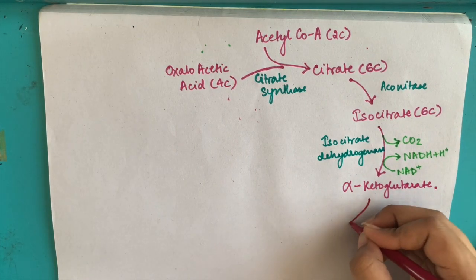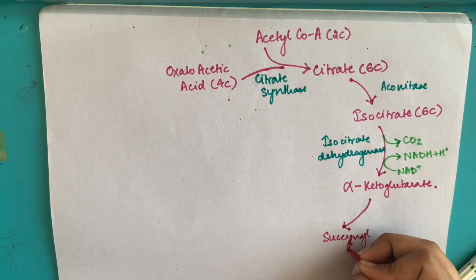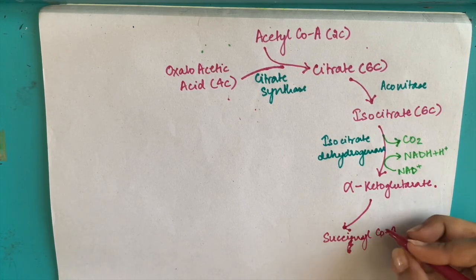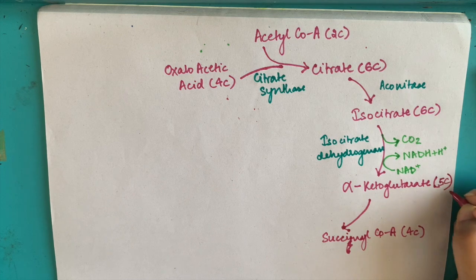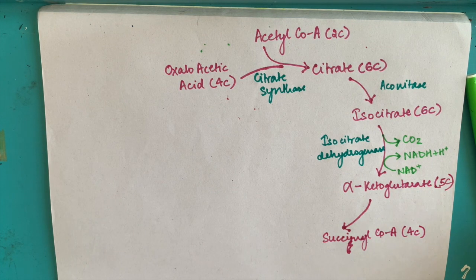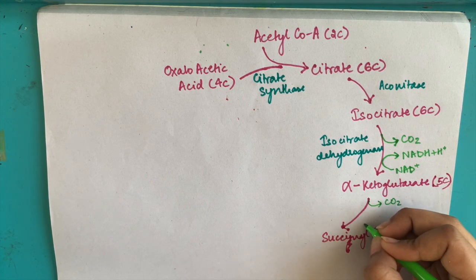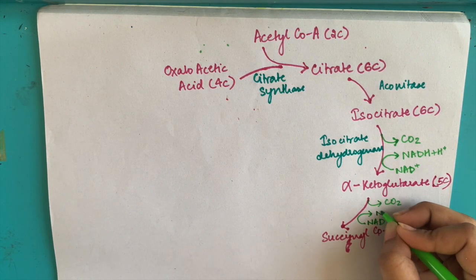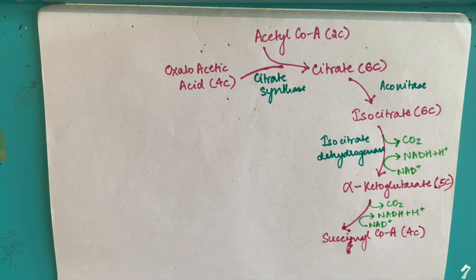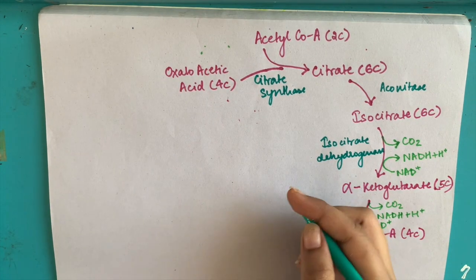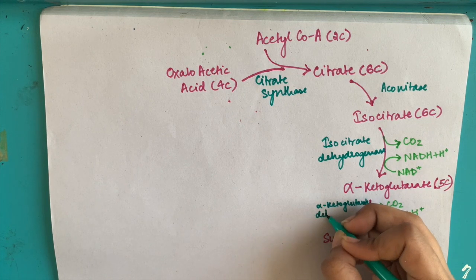The next reaction is the production of succinyl coenzyme A from alpha-ketoglutarate. Again, this involves loss of carbon in the form of CO2. Succinyl coenzyme A is a 4-carbon compound produced from 5-carbon alpha-ketoglutarate. There is loss of CO2 and reduction of NAD+ to NADH plus H+. Since this is being reduced, succinyl coenzyme A is an oxidized product, and the enzyme involved is alpha-ketoglutarate dehydrogenase.